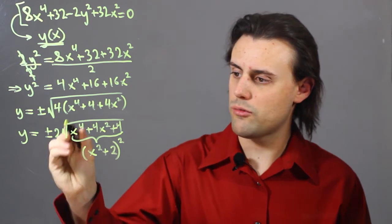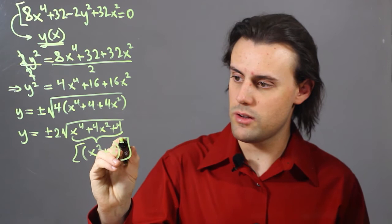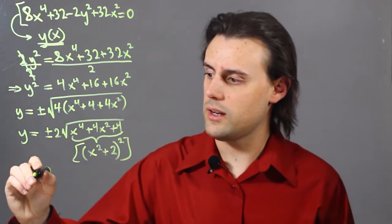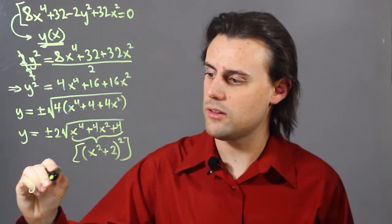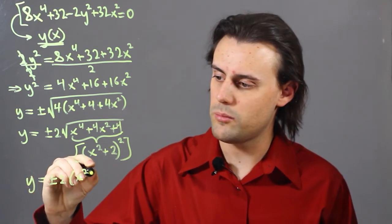So, the square root of this quantity simply acts to remove the exponent, and I'm left with y is equal to plus minus 2 times x squared plus 2.